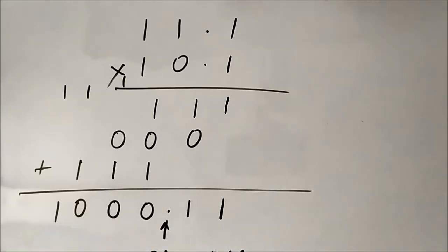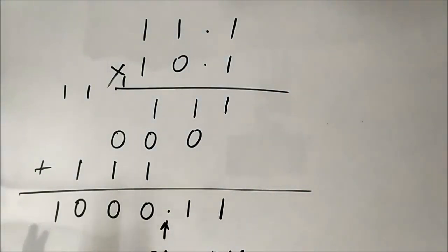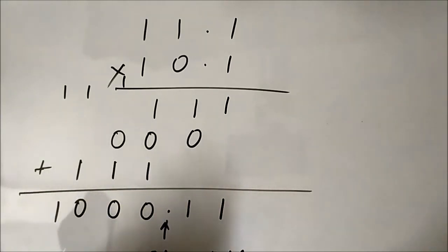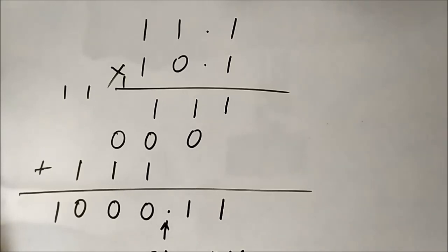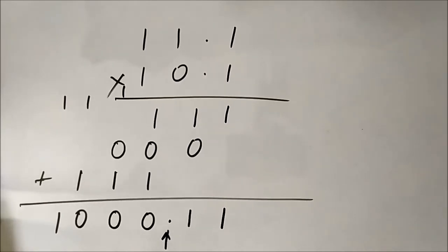This is the multiplication of two binary numbers with fractional parts using binary points, similar to the normal multiplication process. In binary multiplication, unlike binary addition (1+1 = 0 carry 1) and subtraction (0−1 = 1 borrow 1), there is no such complication — it is simple and straightforward. I hope you liked this video. Please subscribe to Engineering Tutorial for more videos on electrical, electronics, instrumentation, and communication engineering. Have a great day, thank you!